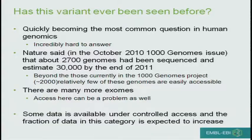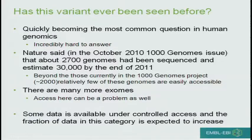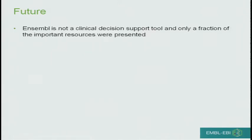This comes down to answering the relatively simple question: has this variant ever been seen before? I think it's becoming one of the most important questions in human genomics, but it's incredibly difficult to answer. Most people trying to answer this are collecting all the data they can themselves. Going back to the 1,000 Genomes issue of Nature in October 2010, they said there were about 2,700 genomes and predicted 30,000 by end of 2011. It's very difficult to get your hands on any large number of genomes to use as a sensible control, and even data under controlled access is challenging to get. Ensembl is not a clinical decision support tool, but I think some of the things we're doing show the way forward.